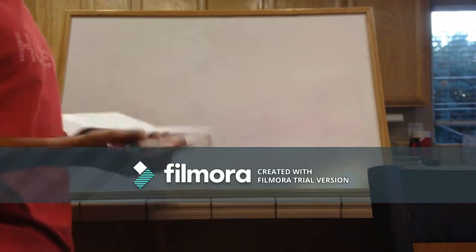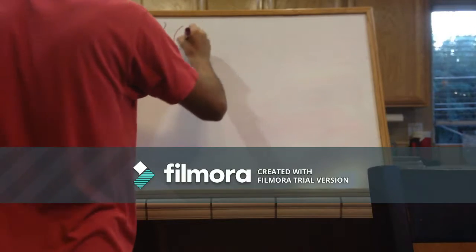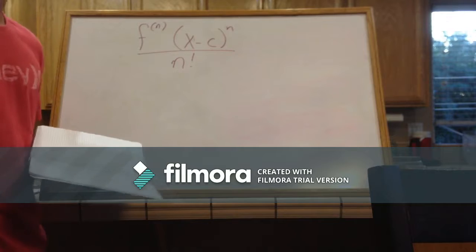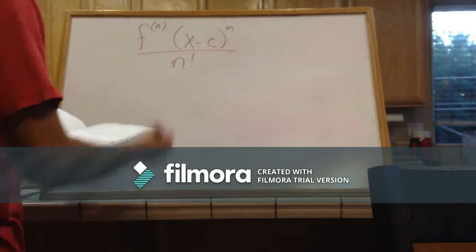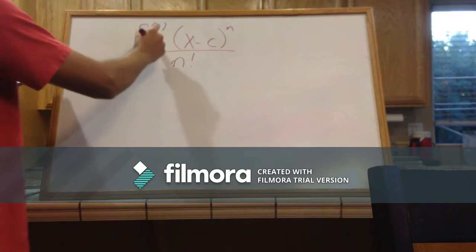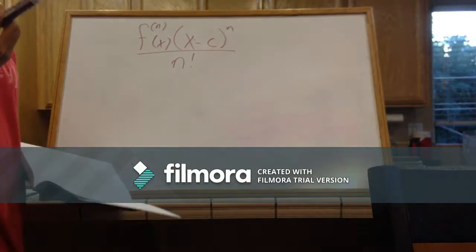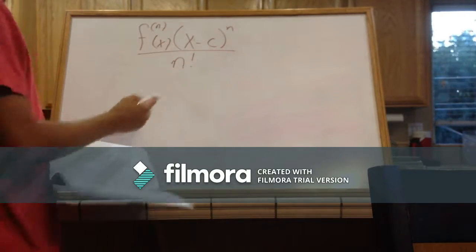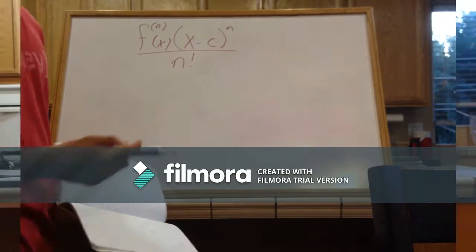So the general form whenever we make a polynomial is this. Please forgive my handwriting, I'm not an artist necessarily, I'm a math guy, okay? Give me a break. So this is our general thing: whatever the constant is if you plug in x into the derivative to the nth derivative times x minus c to the n over n factorial.